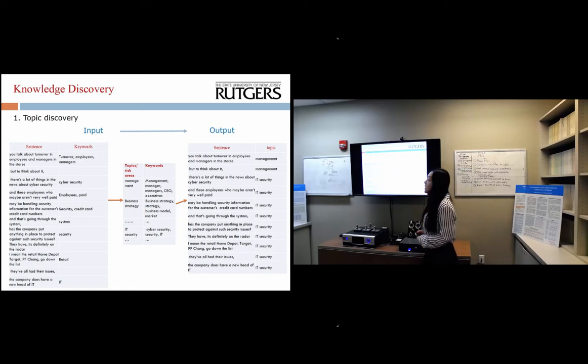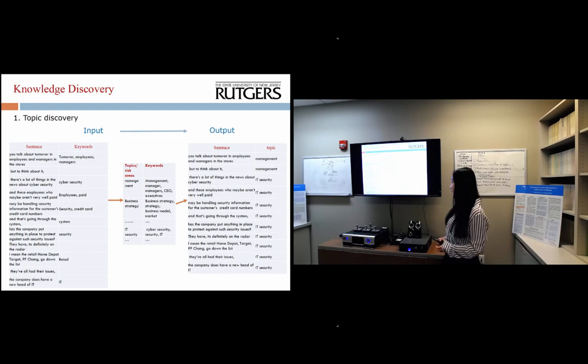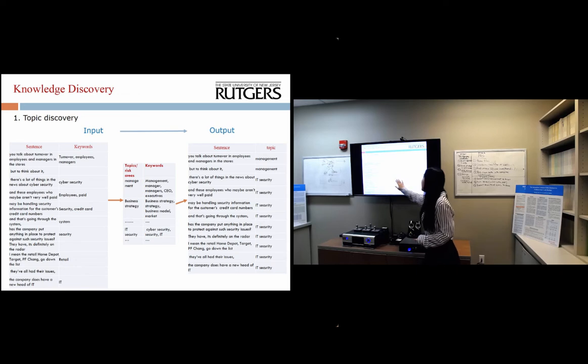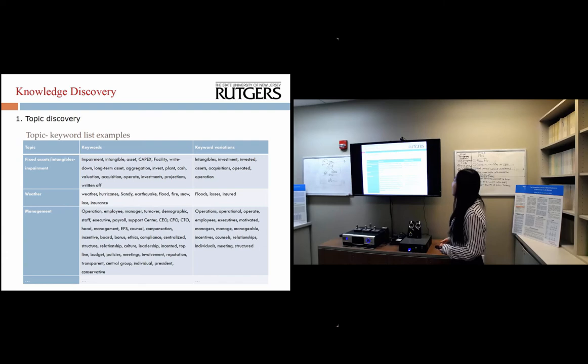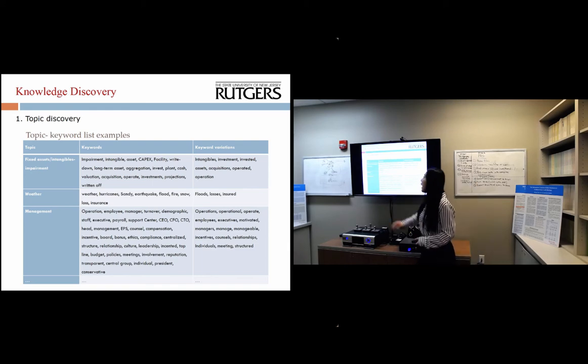Based on the sentences we identified, we will try to identify the topics of each sentence. In the topic discovery process, we have predefined topic and keyword taxonomy. In the end, for each sentence we will discover its topic, which we can then use to group these sentences to extract the knowledge. Here shows one example of the topic keyword list. These keywords will be used for identifying topics.